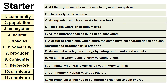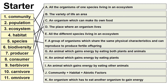Okay, revision from last time. Put numbers one to eleven and match them to the appropriate letter. Number one, community is E — all the different species living in an ecosystem. Two, population is A — all the organisms of one species living in an ecosystem. Three, ecosystem is J — the community plus the habitat plus abiotic factors. Four, habitat is D. Five, species is F. Six, biodiversity — variety of life — is B. Seven, producer is C — an organism which can make its own food. Eight, consumer is K. Nine is H. Ten is I. And eleven is G.